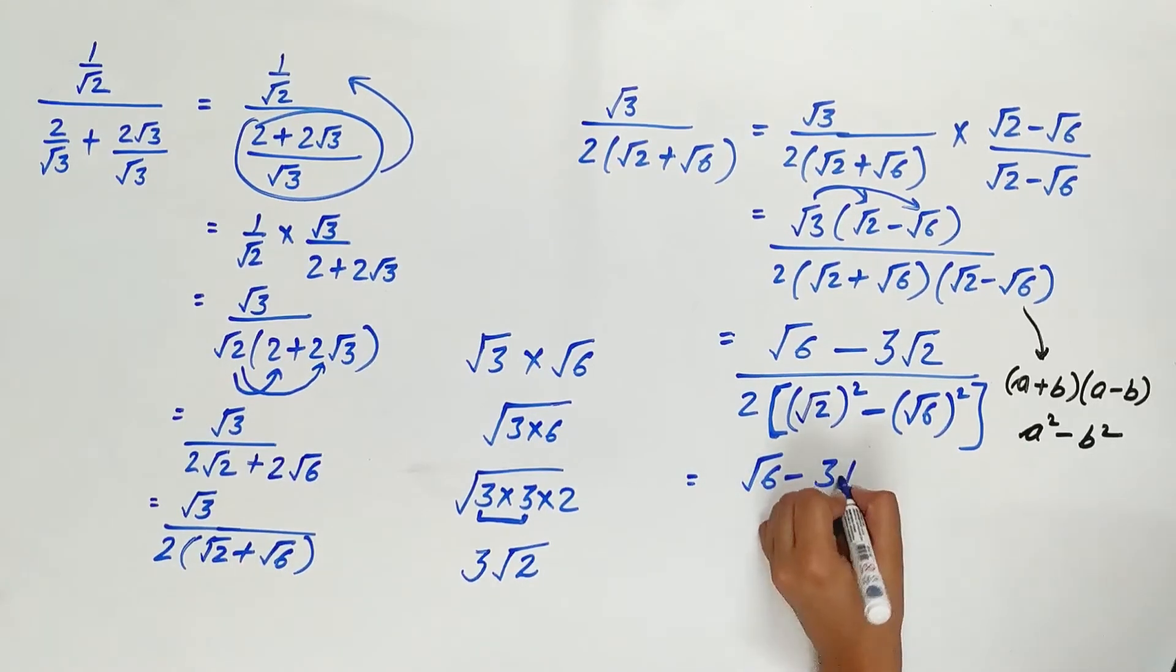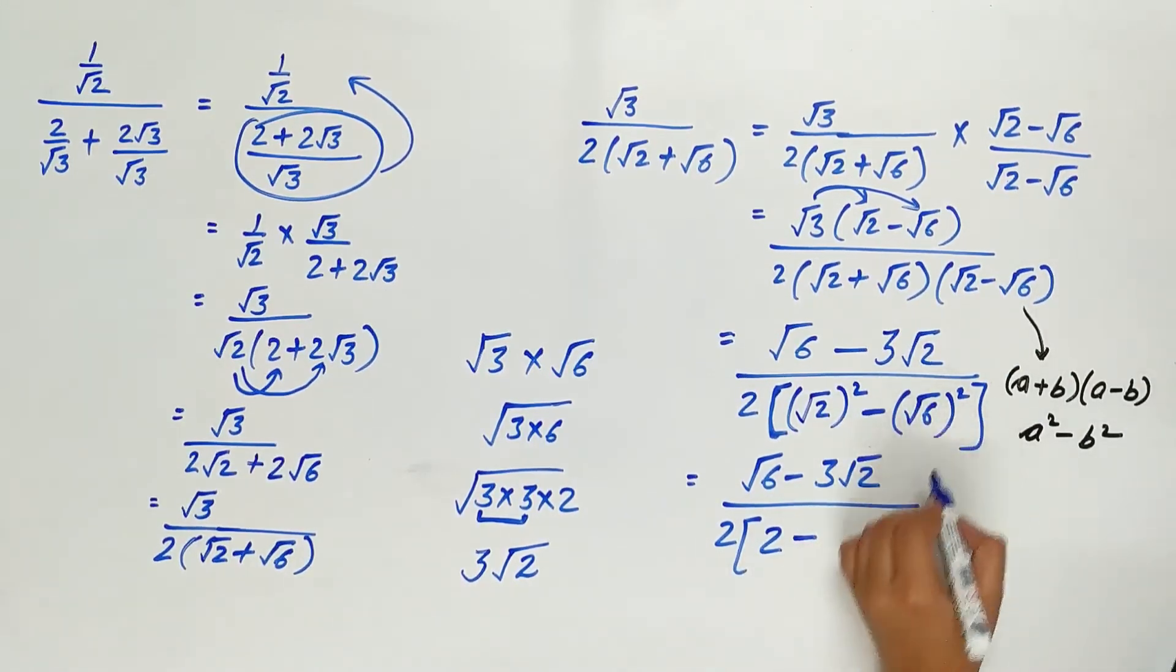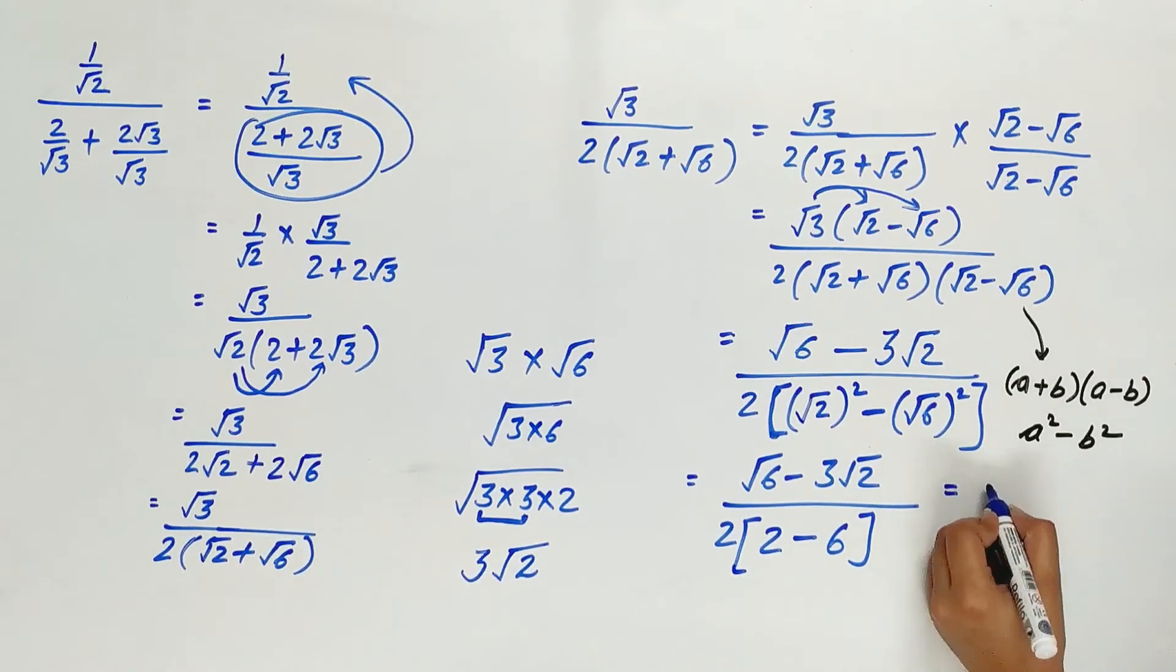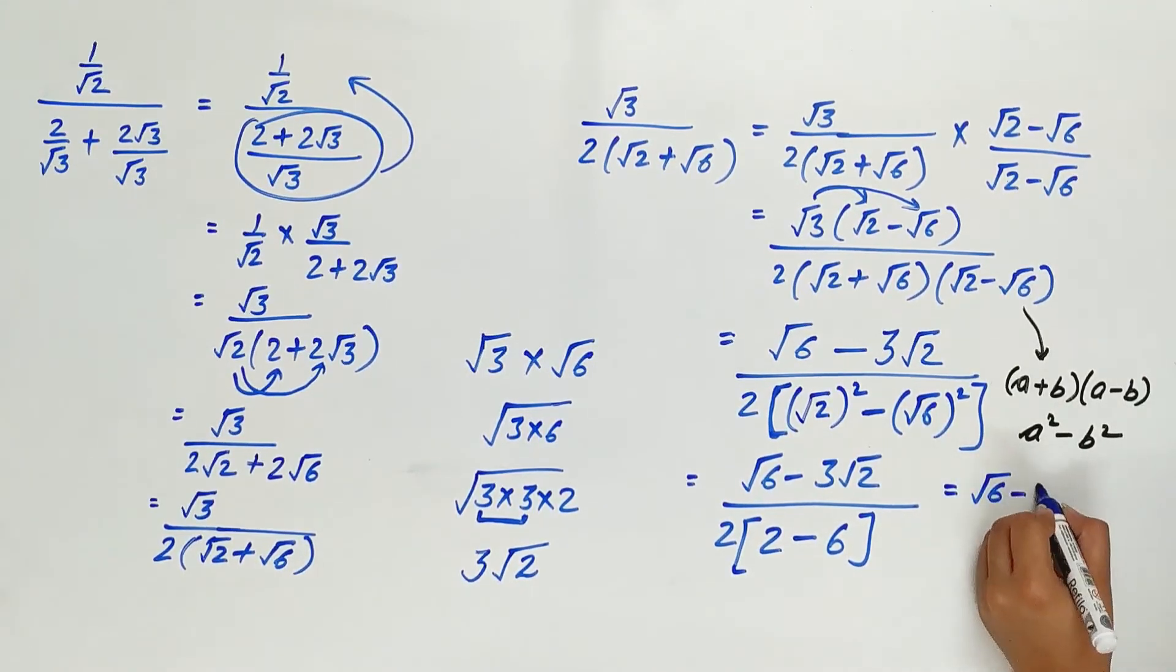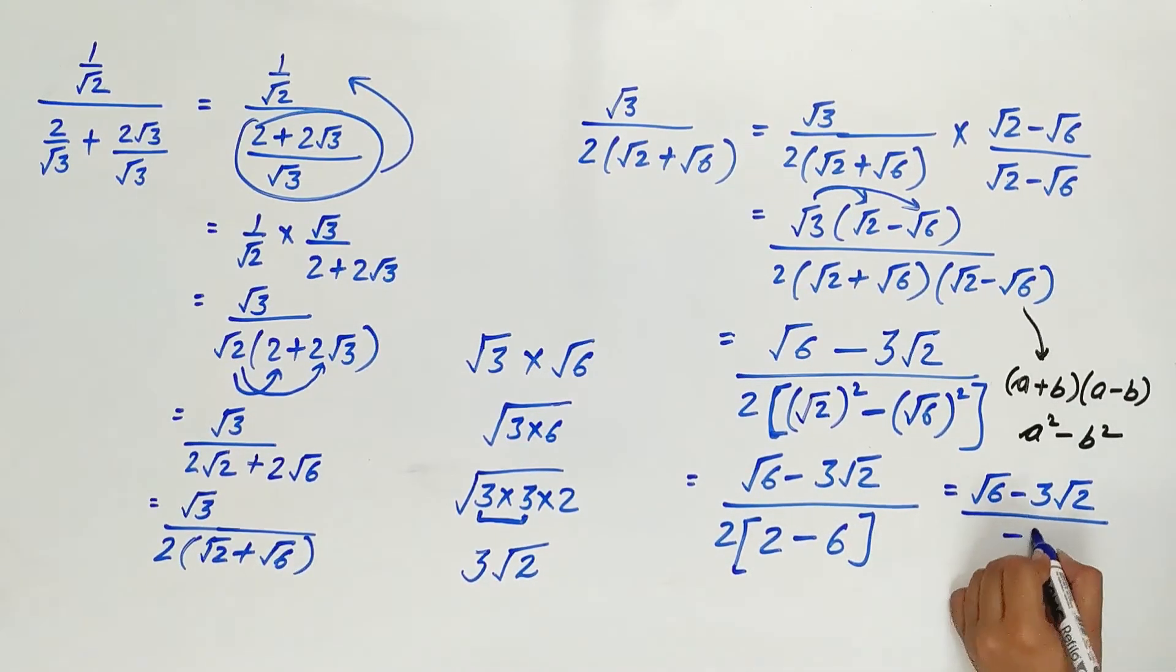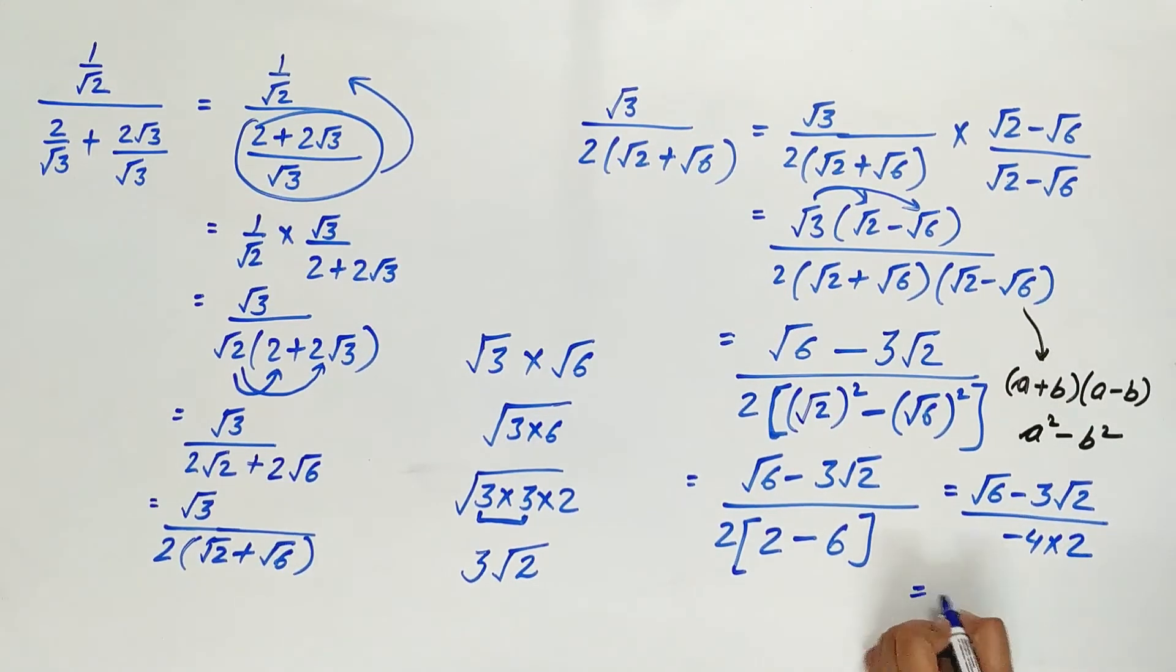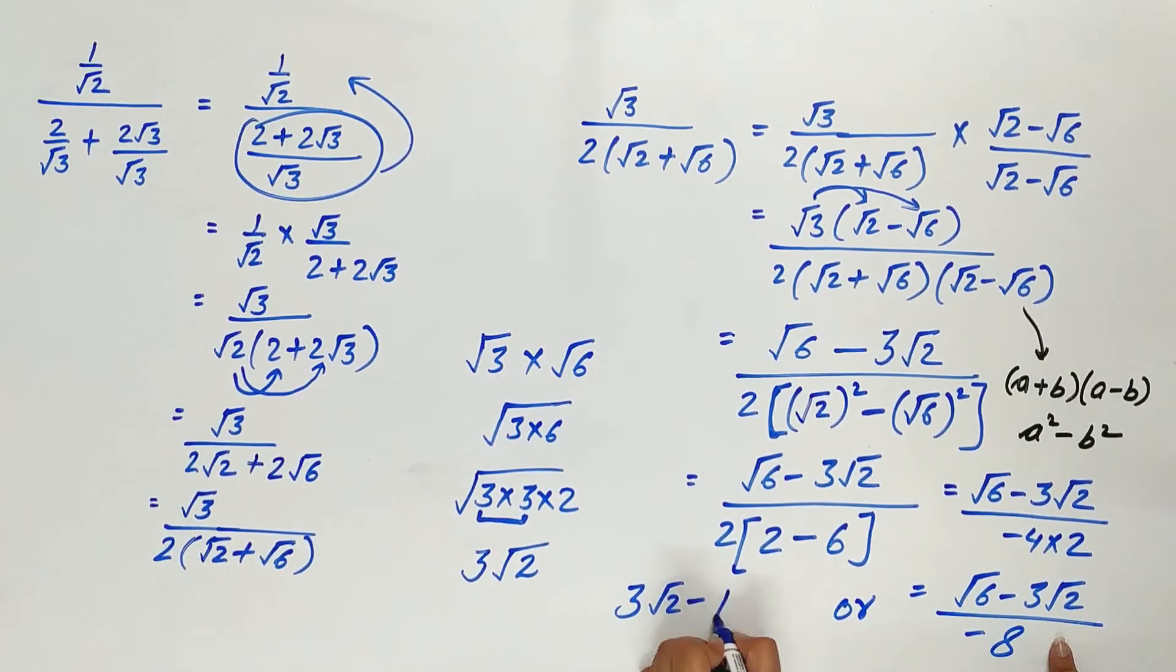Root 6 minus 3 root 2 divided by 2. Root 2 square is 2 and root 6 square is 6. Root 6 minus 3 root 2. 2 minus 6 is minus 4, which gives us 3 root 2 minus root 6 divided by 4, or multiplying by 2 gives 3 root 2 minus root 6 divided by 8.